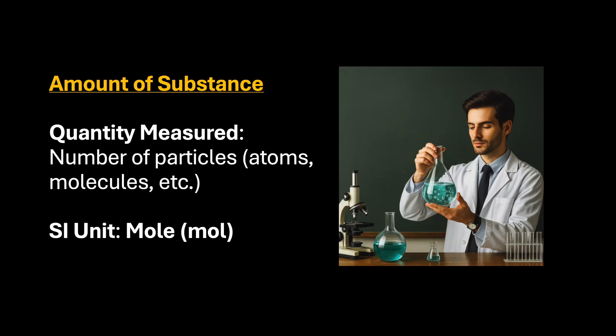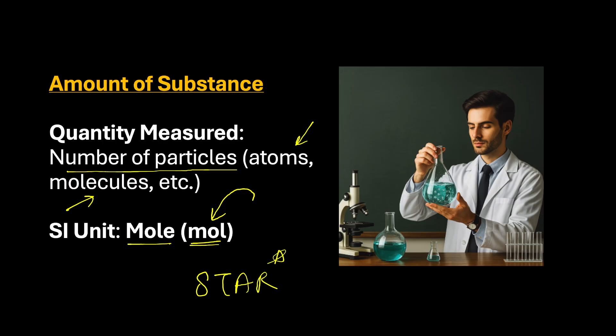The next one is a chemist's favorite — it is the amount of substance. If we want to calculate the number of particles, maybe the number of atoms or molecules, we can measure it in mole. The SI unit is mole, M-O-L-E, and the symbol is mol, M-O-L, all in small letters. This is the unit which is going to be the star of the chapter. There is no specific instrument as such, but we have different ways to find out the mole of a substance.